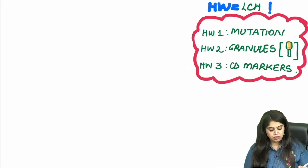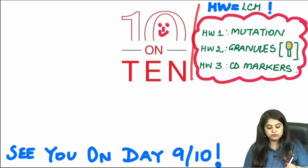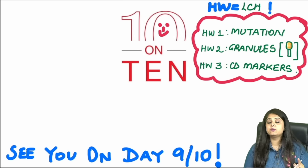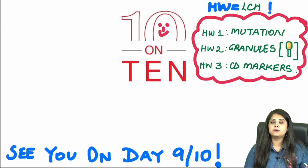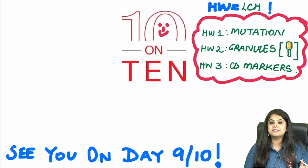We have wrapped up today's session of 10 on 10. I will meet you for Day 9. Today's three homeworks are on Langerhans cell histiocytosis: Number 1 — tell me the mutation. Number 2 — the tennis racket appearance I showed you were of which granules of Langerhans cells. Number 3 — tell me the CD markers. These are your homeworks for the day, and I will be following up in the comments. See you for Day 9, which will probably have another twist in the series!